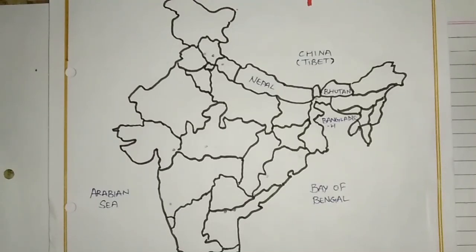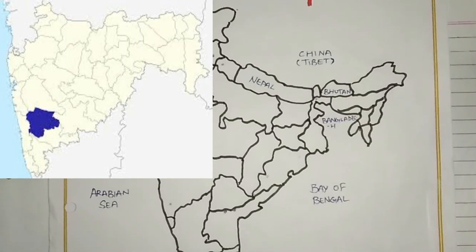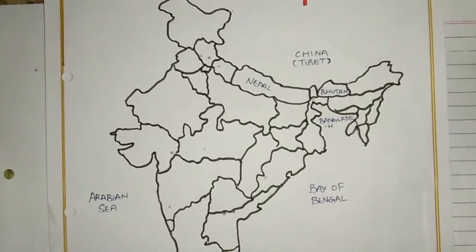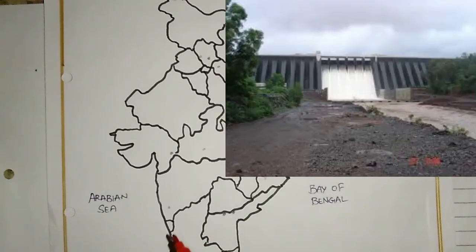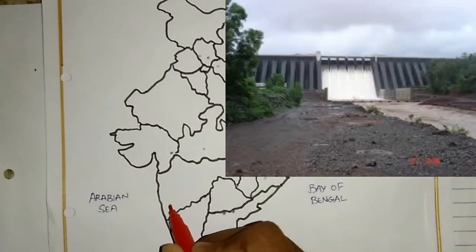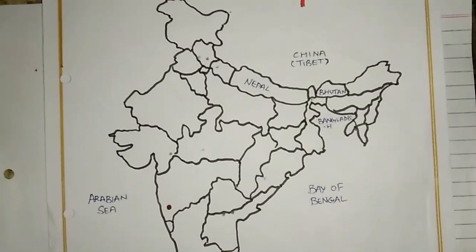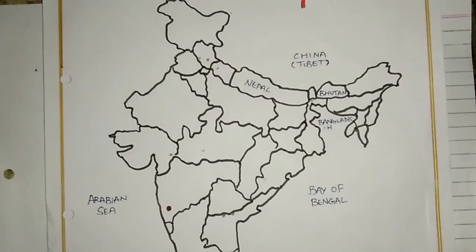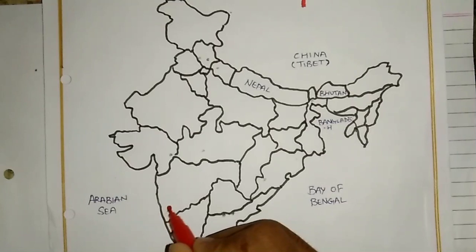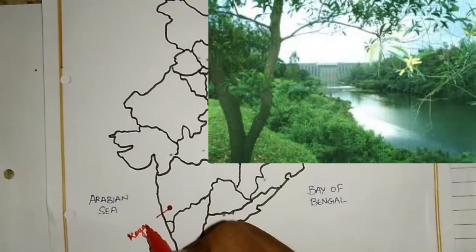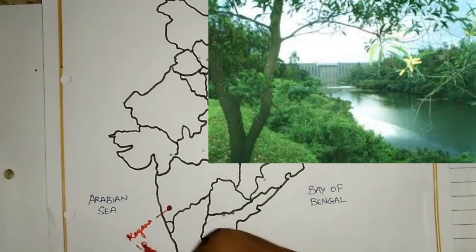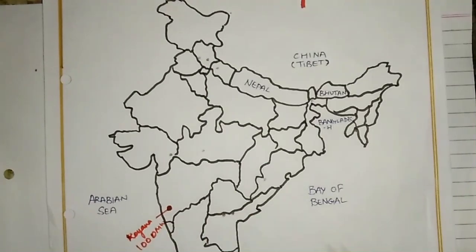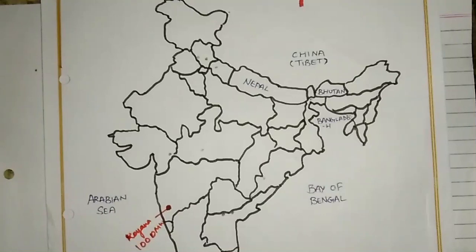First of all, friends, the Koyana Dam is located here in Maharashtra. The Koyana Dam produces around 1,000 megawatts of electricity.